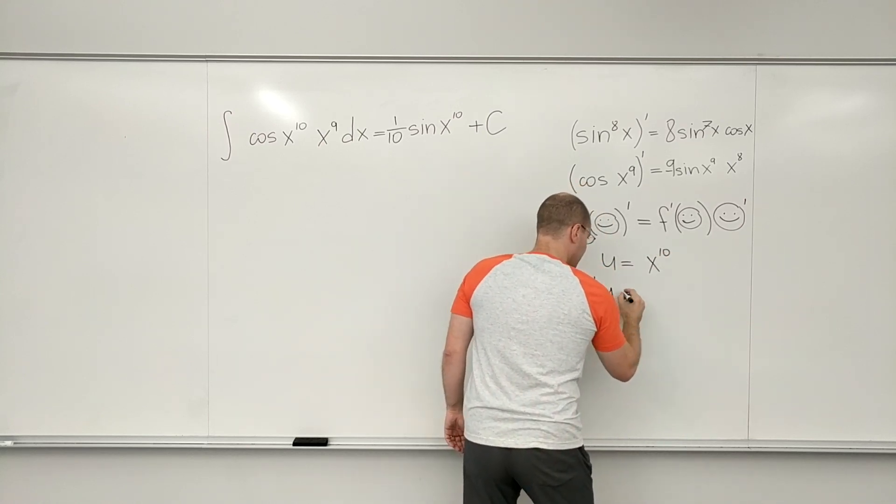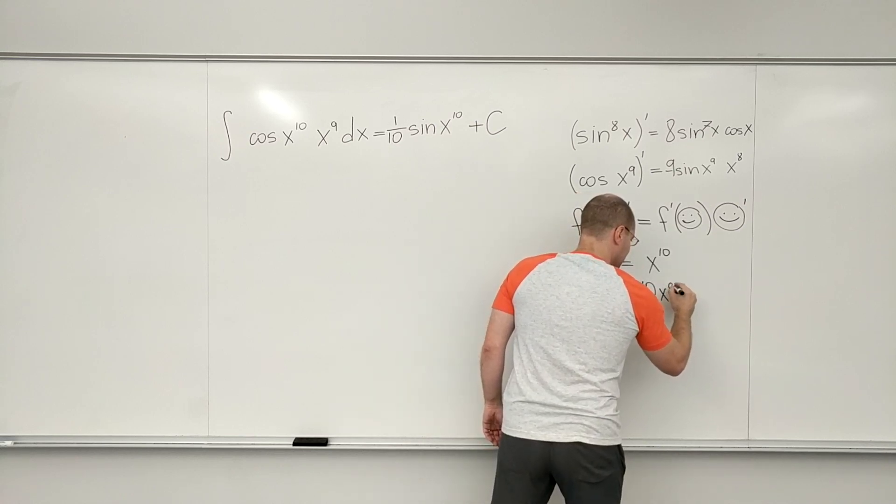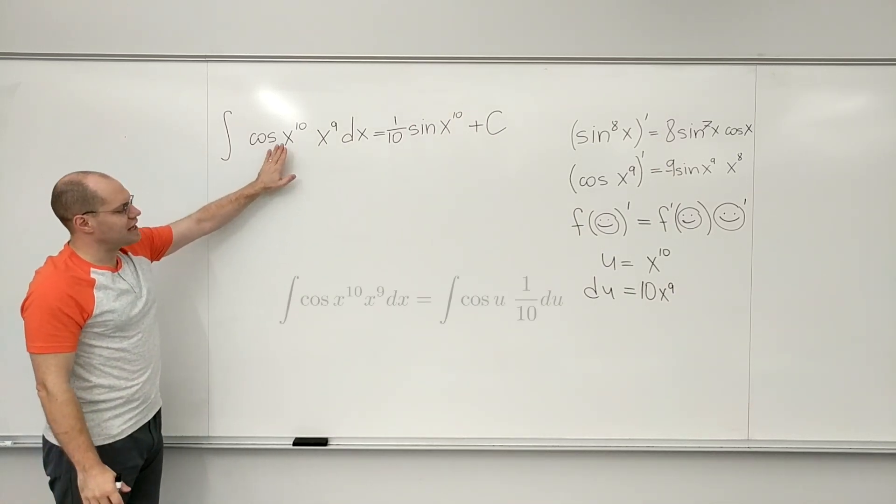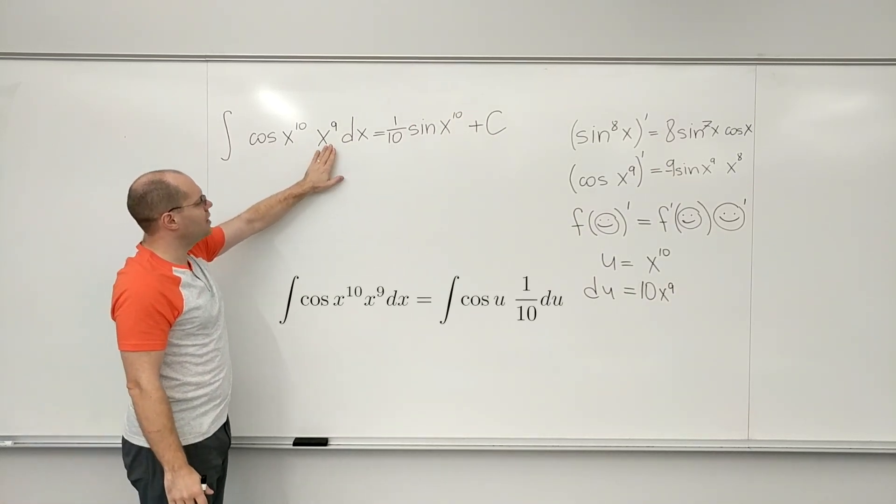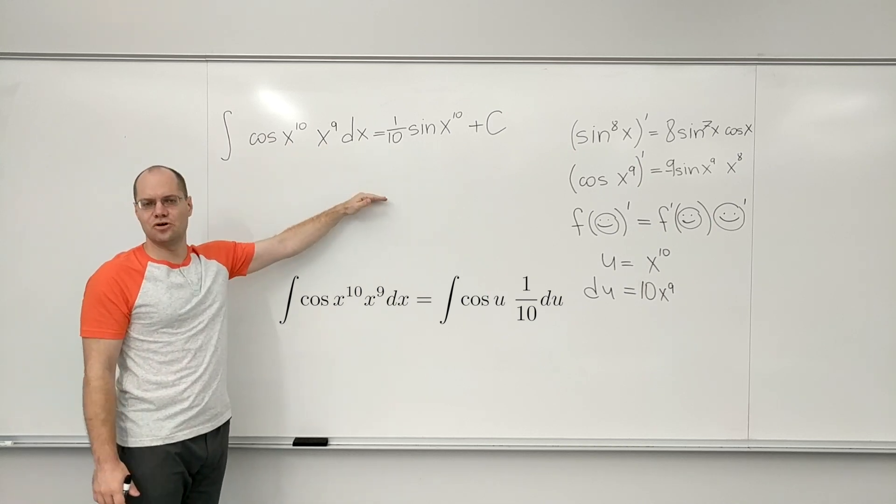U equals x to the tenth. Then du equals 10 times x to the ninth. And then from here, you will make a cosine of u times one tenth du. And I guess you'll go from there.